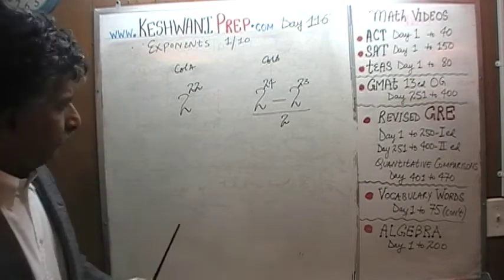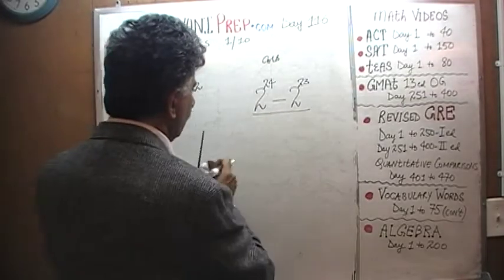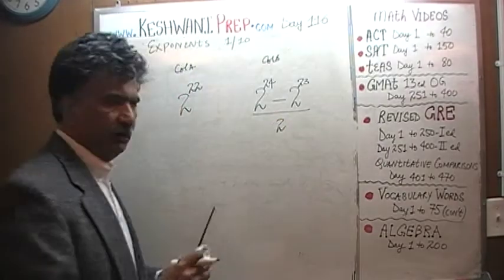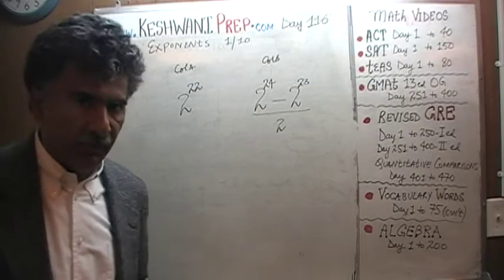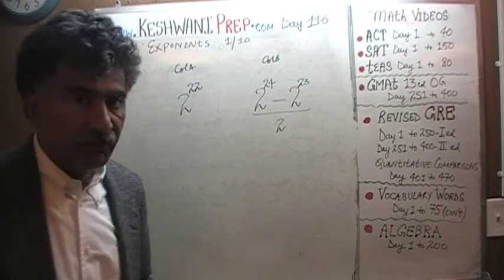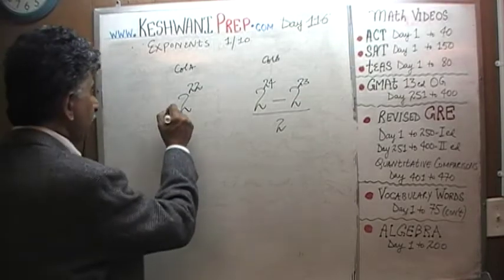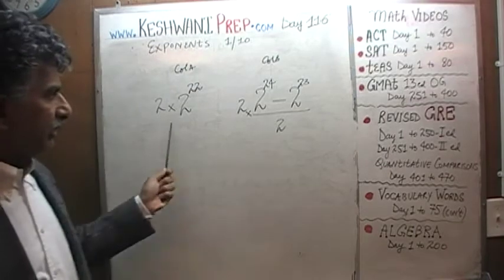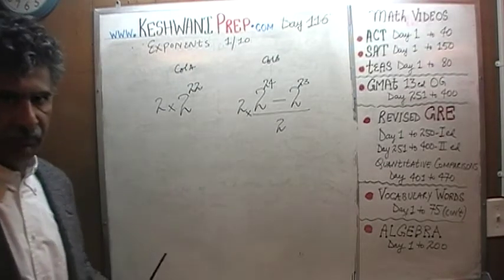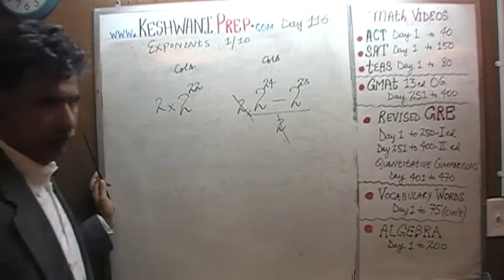Here we go. 2 raised to 24 minus 2 raised to 23 over 2. The first thing we need to do is somehow get rid of this denominator here, the 2 at the bottom there because it is annoying. We can get rid of this 2 from the bottom by multiplying both columns by 2. As long as we multiply both columns by the same positive number, we are not changing anything. So now this 2 goes away, this 2 is going to cancel out with that 2.